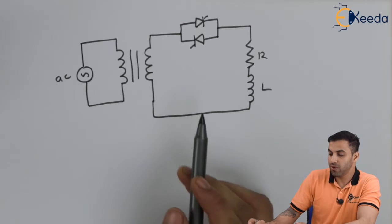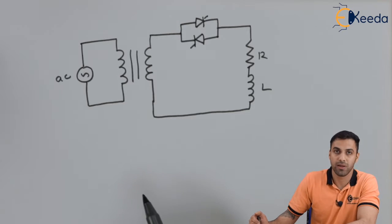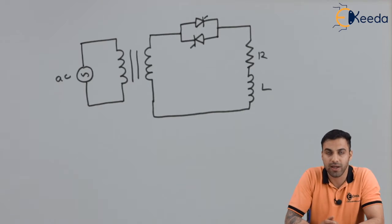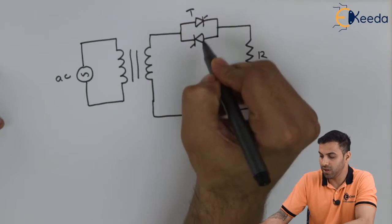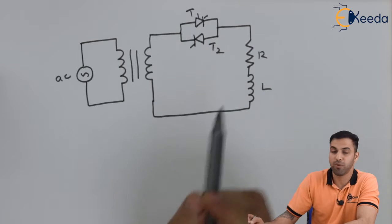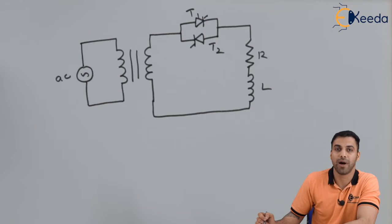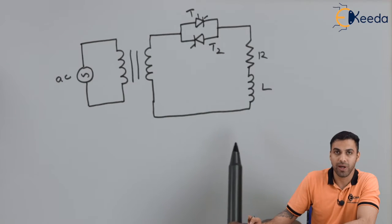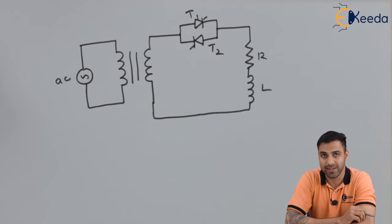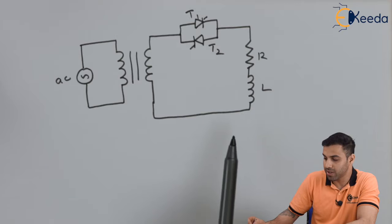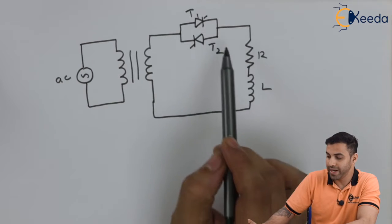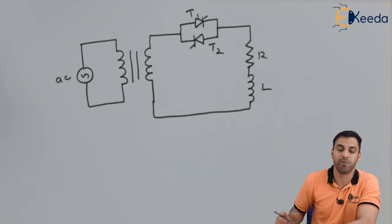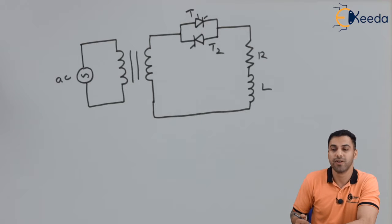As we all know, the thyristor allows the flow of electric current only in one direction, so it will be blocking. Thyristor T1 will be blocking all the negative half cycles. Whenever there is an inductive load, the inductor gets charged and again gets discharged. During discharging, T2 will be conducting and providing a path for the discharging of the inductor.